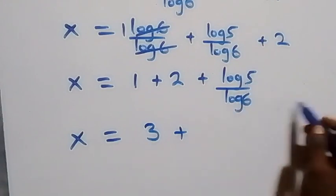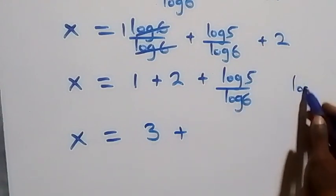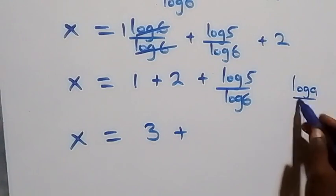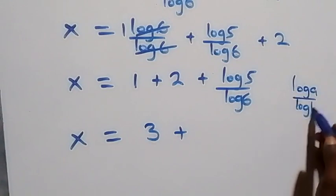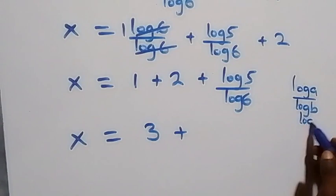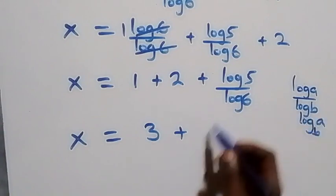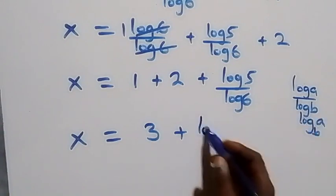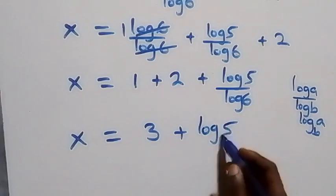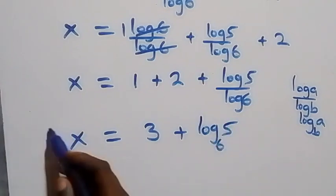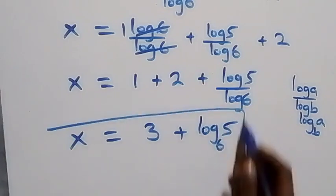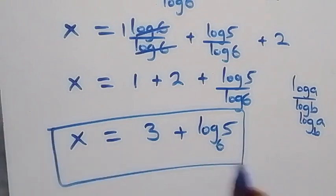Applying the change of base rule, where log a over log b can be written as log a to base b, what we have here becomes x equals 3 plus log 5 to base 6. So the value of x in this problem is x equals 3 plus log₆5. Now let's check if this satisfies the given problem.